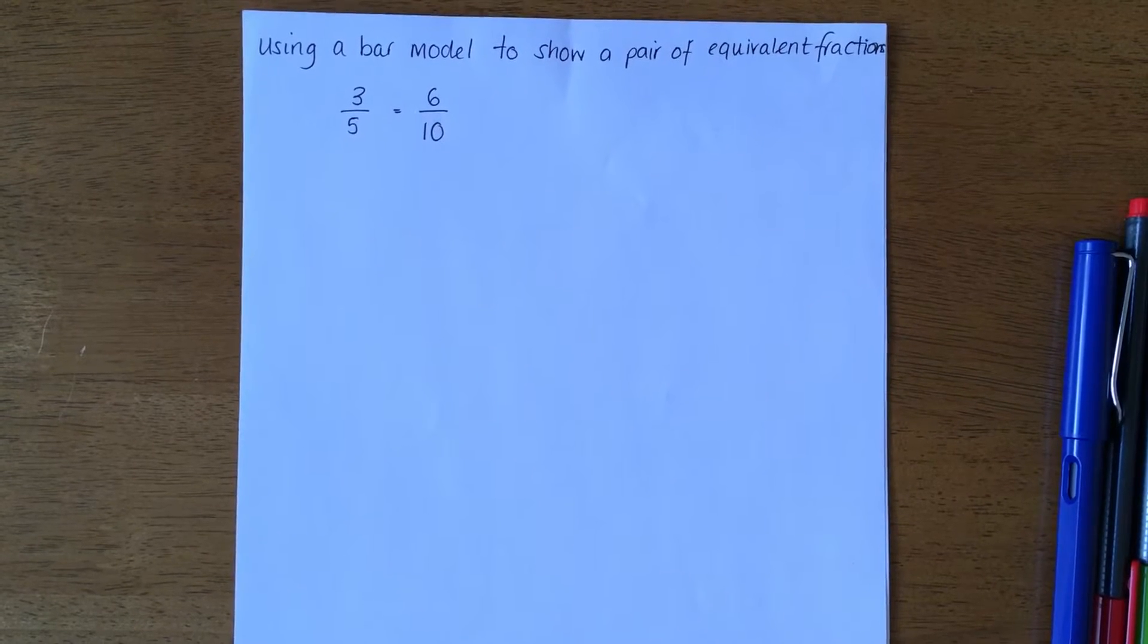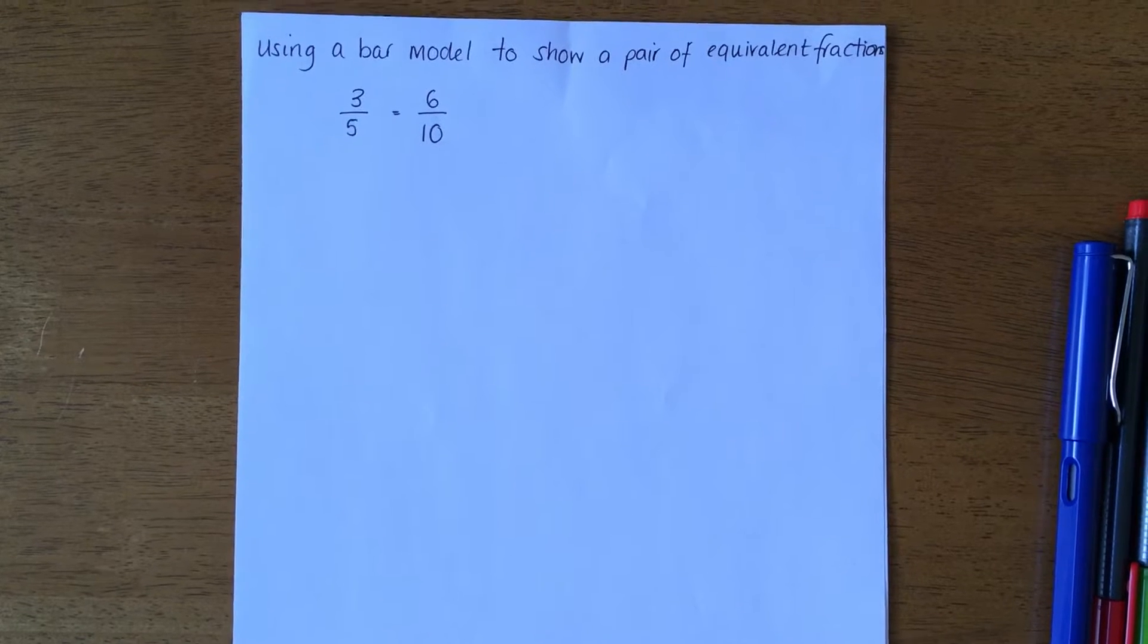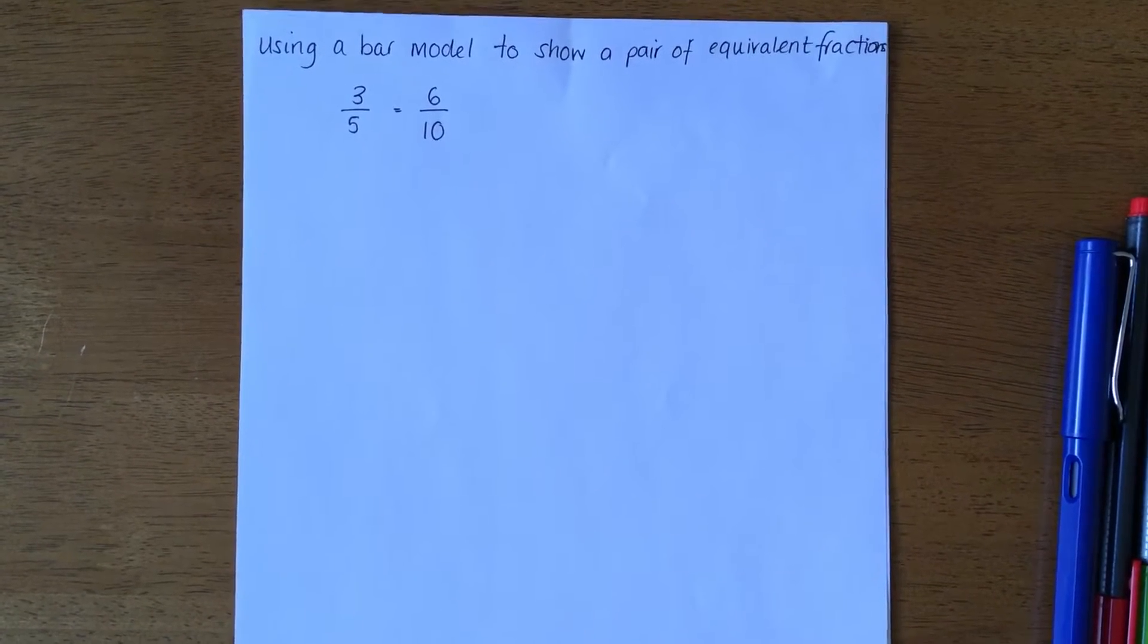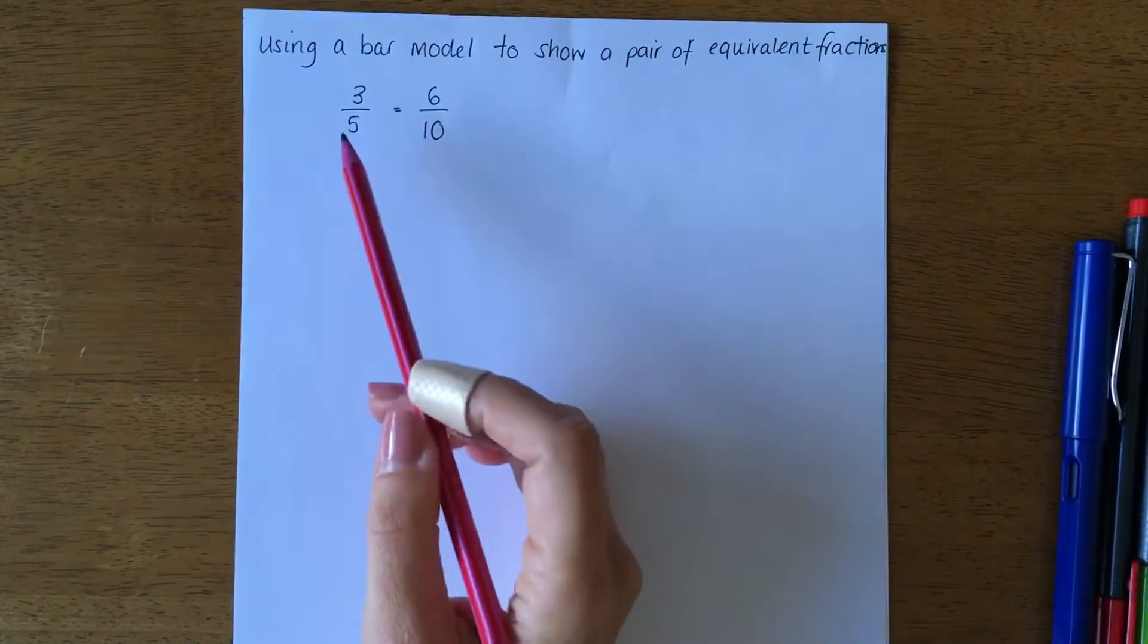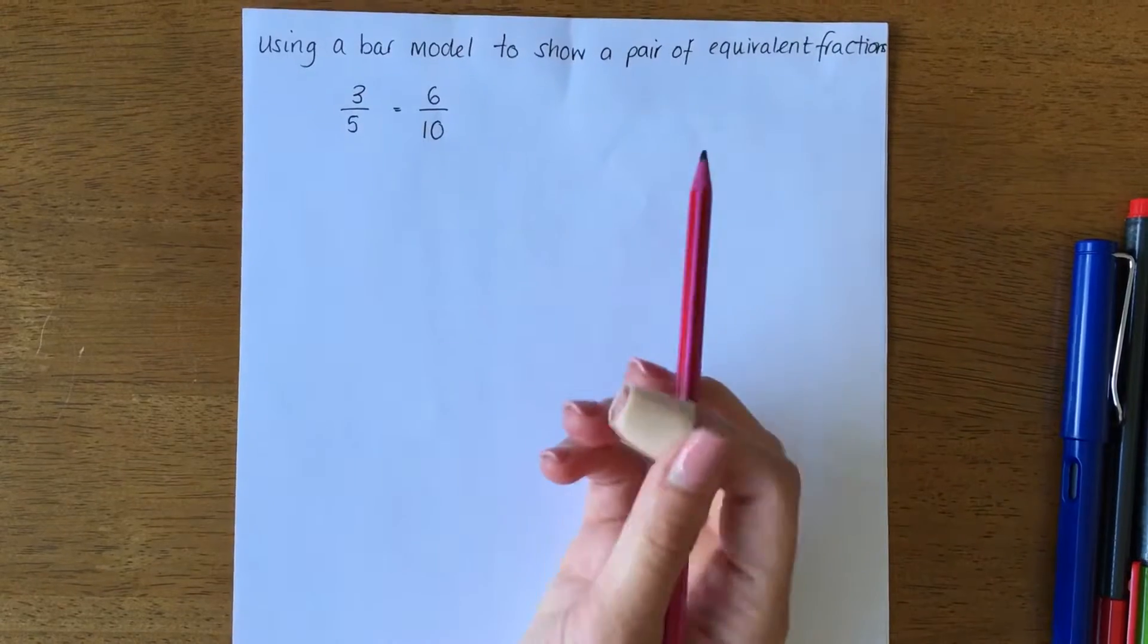Hi everyone, hope you're okay. What I'm going to do today is show you how to use a bar model to show a pair of equivalent fractions. So what we've got here is 3/5 equals 6/10. I'm going to draw a bar to represent each of those.